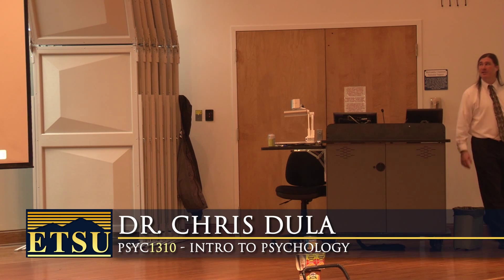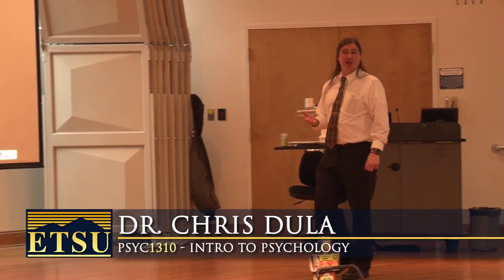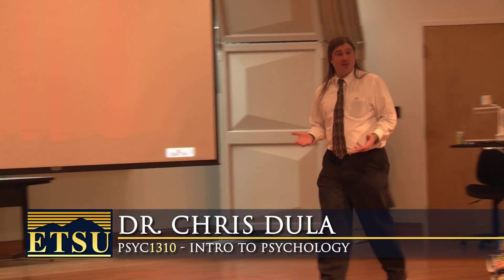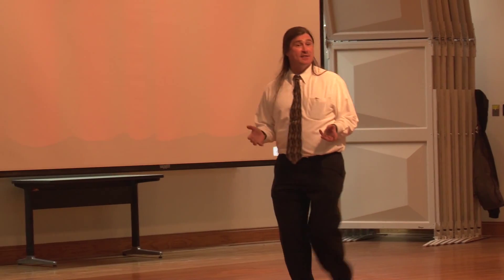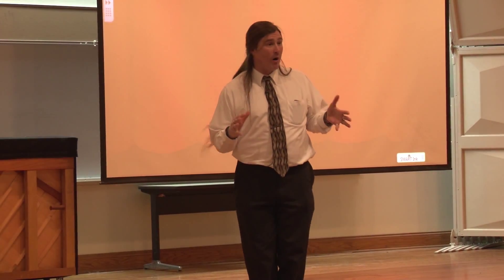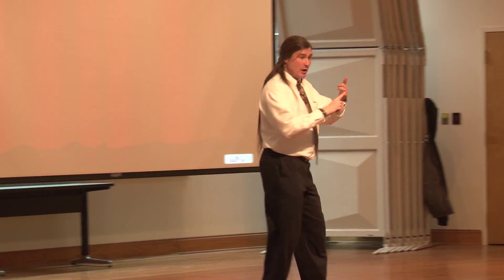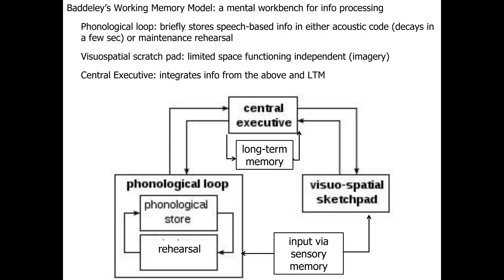We're going to talk about Baddeley's working memory model as differentiated from Atkins and Schifrin's model. Atkins and Schifrin's model gives us the basics. They're also present in Baddeley's model, so you don't have to learn a lot more. Atkins and Schifrin give us sensory memory, short-term memory with rehearsal, and long-term memory that interacts with short-term memory. Baddeley's working memory model talks about a mental workbench for processing information.